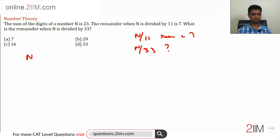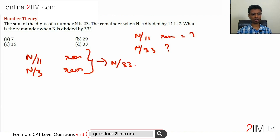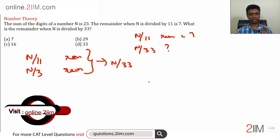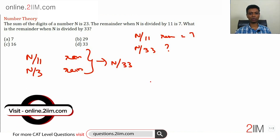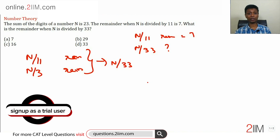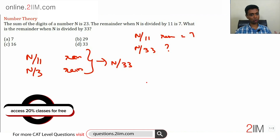If we know the remainder of n÷11 and the remainder of n÷3, then we can find the remainder of n÷33. You should know that if you know remainders for 11 and 3, you can find the remainder for 33. Similarly, for n÷5 and n÷8 you can find n÷40. In general, if you know remainders for n÷a and n÷b, you can find the remainder for n÷(a×b), if a and b are co-prime.